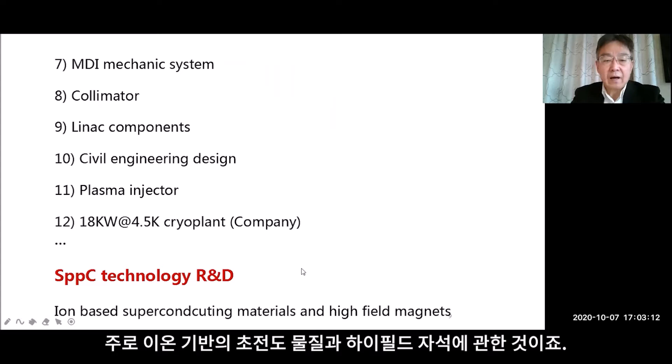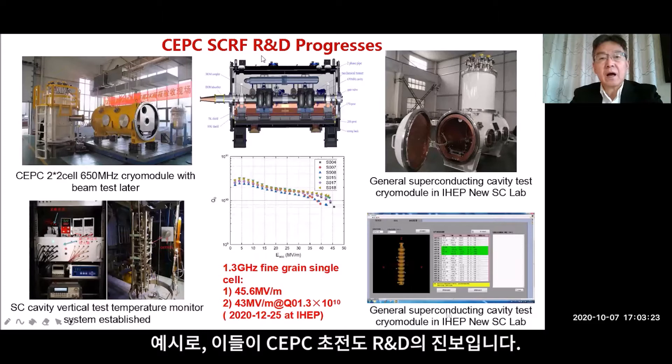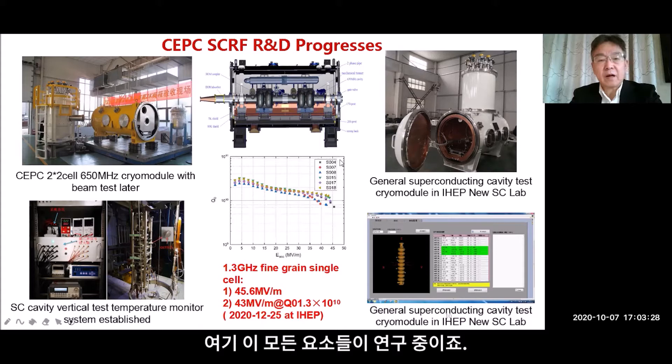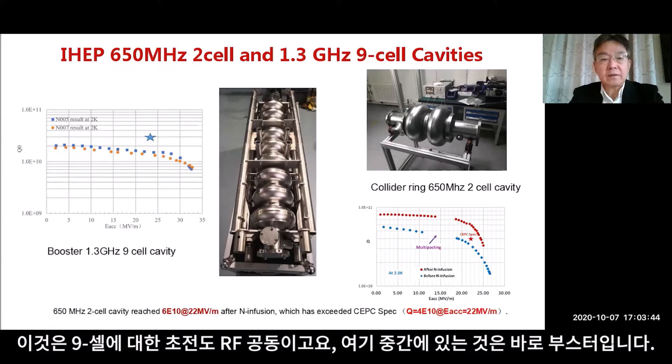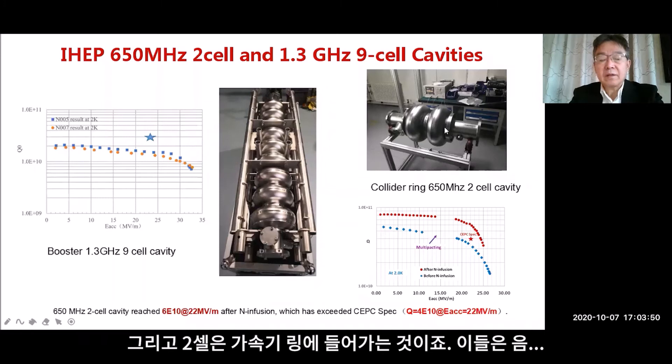For SPPC, the technology R&D is mainly focused on iron-based superconducting materials and high-field magnets. For the CEPC superconducting R&D progress, all these components are under study in their design and characterization stations. This includes superconducting RF cavities — a nine-cell cavity in the middle for the booster.